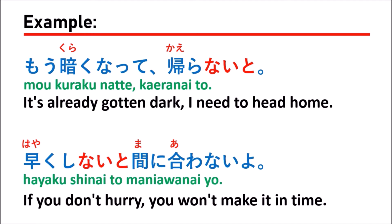For the third example, we use the verb kaeru which means 'to go back home', changed to kaeranai to — it's already dark so you have to go home. For the fourth example, we use haiyaku shinai to, using the verb suru. When you change suru to the nai form, you get shinai, so haiyaku shinai to mani wa nai yo means if you don't hurry, you won't make it in time — for example, when you need to submit a document at work.